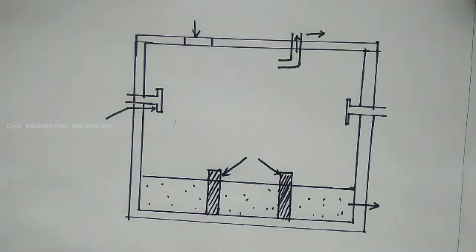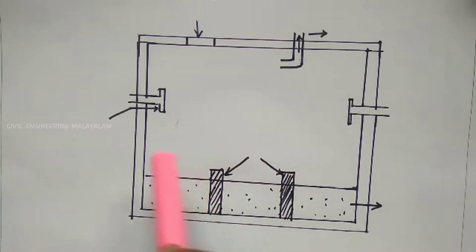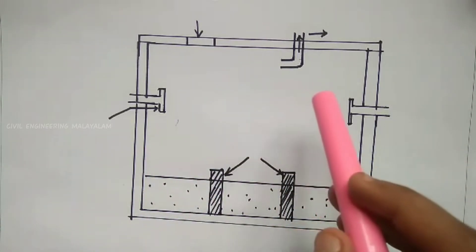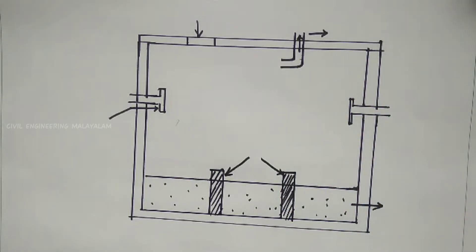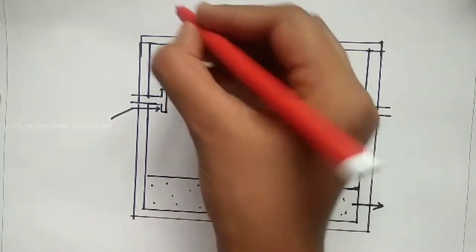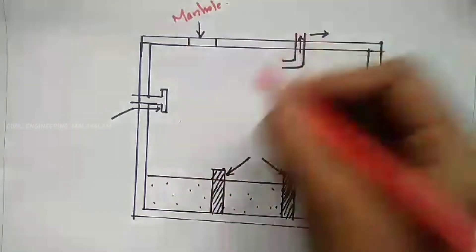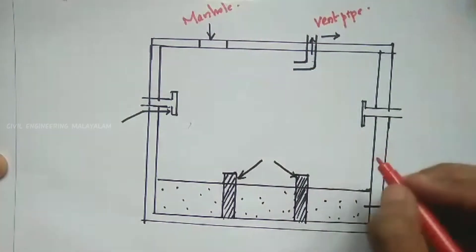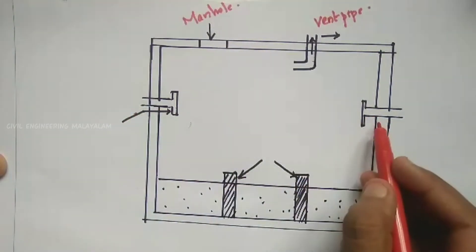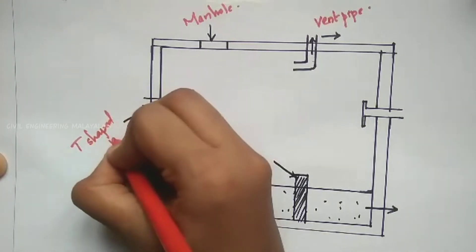This is a septic tank — it can be made as a plastic tank. It has several parts. We have a manhole for access, and there is a vent pipe for gas. You can provide an inlet and outlet. This is a T-shaped inlet.